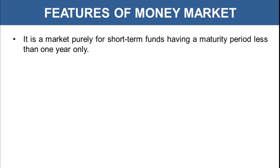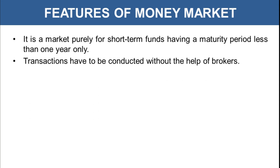Let's see the features of money market. It is a market purely for short-term funds having a maturity period of less than one year only. If you are investing in money market instruments, they are short-term and your investment will mature within one year, so you can withdraw your money within that time. Transactions are conducted without the help of brokers — unlike in capital market — through various oral or written communication forms.